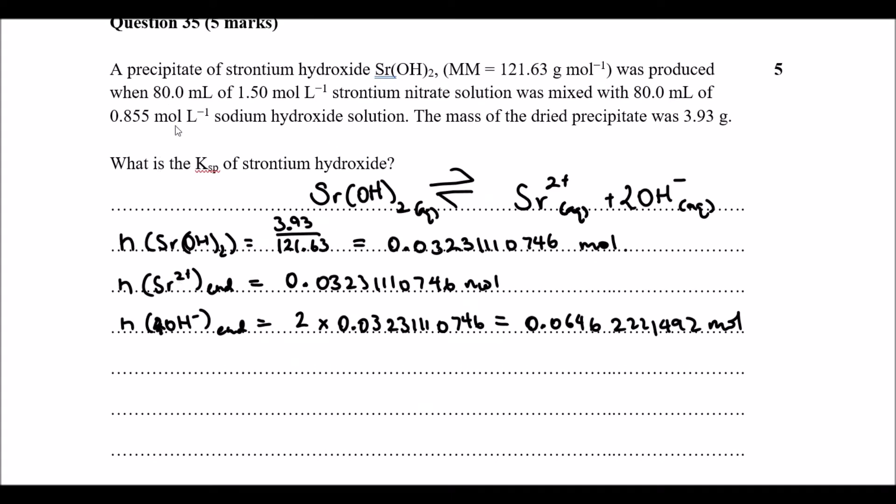What we need to now look at is how much did we actually have at the start, and how much remains at the point where we reach equilibrium. Just remember, the amount that we've actually used, that is no longer accounted for when we do our K value at the end. I'll explain a little bit more of that at the end, but the original...